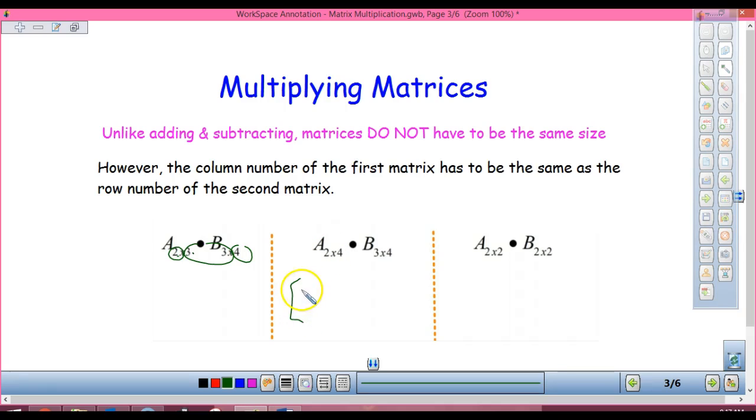So if I multiply a two by four times a three by four, see how different those look? But this one's a two by four, and this one's a three by four. Are my inside numbers the same? So these cannot be multiplied.